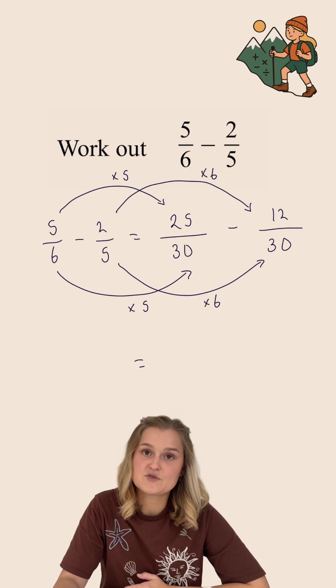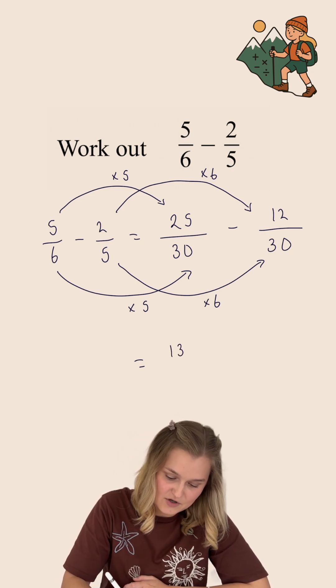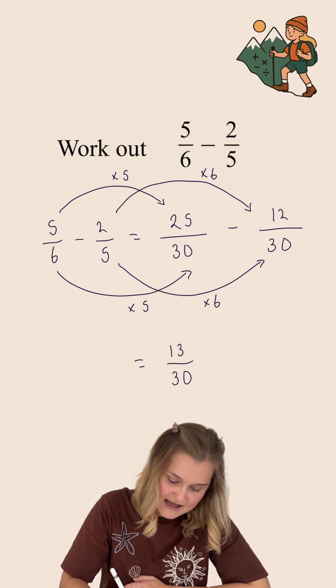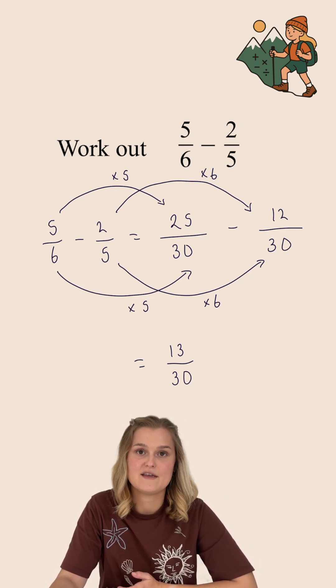When you subtract fractions, you subtract the numerators and leave the denominator the same. 25 subtract 12 is 13, and my denominator stays as 30. So my final answer is 13 over 30.